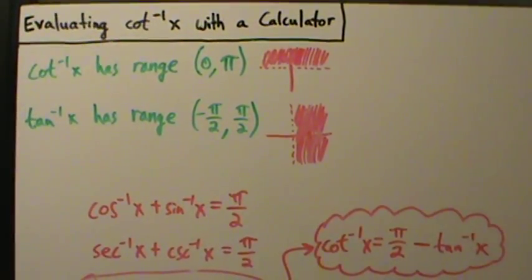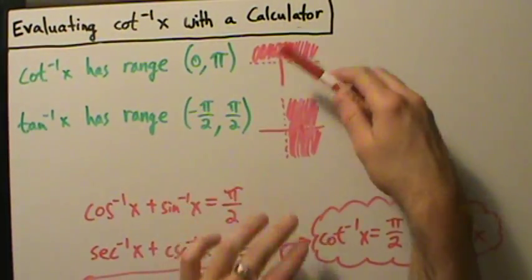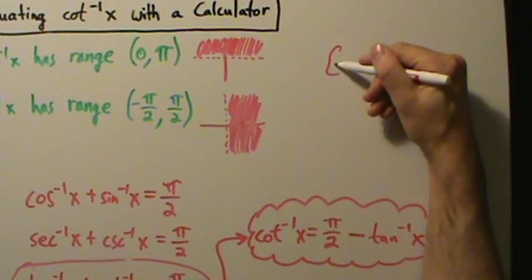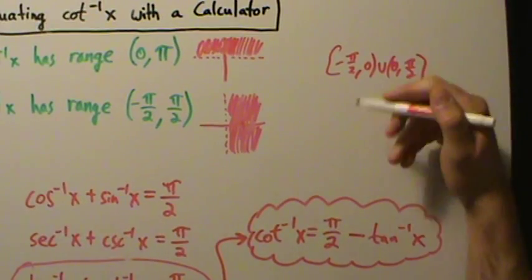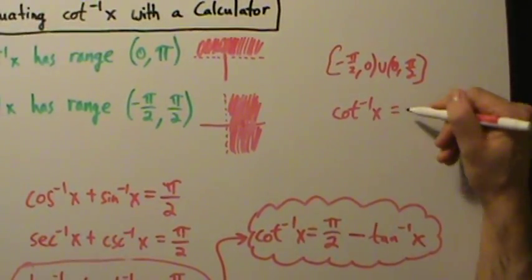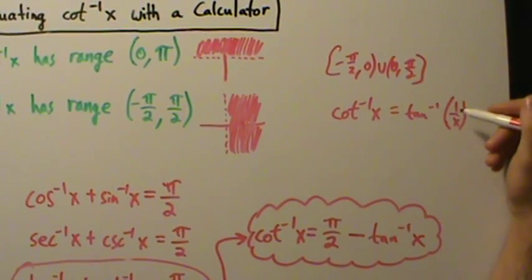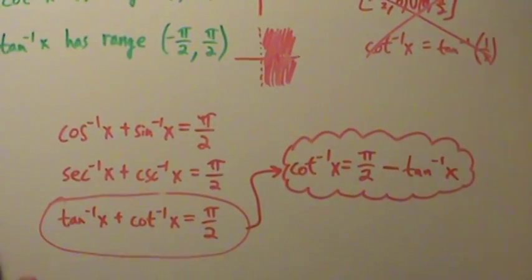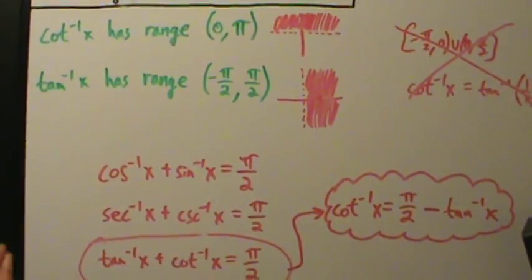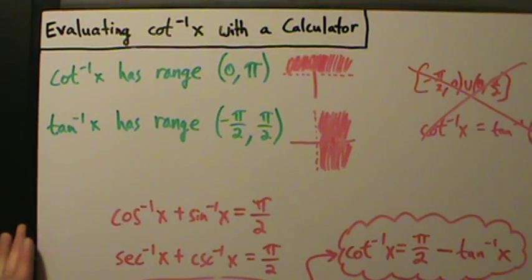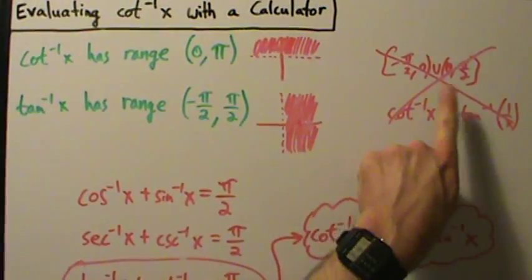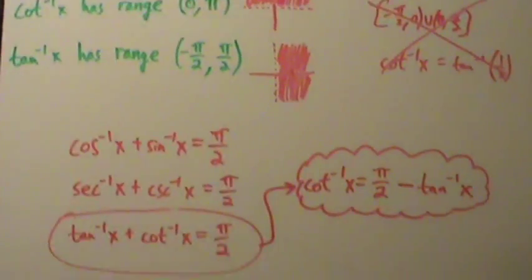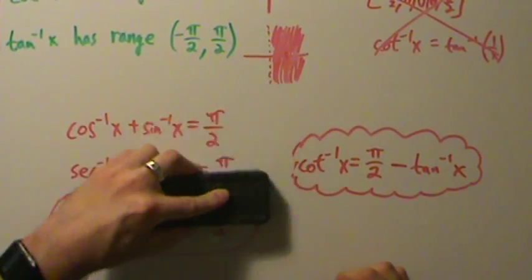We only have this identity being true because of how we defined the inverse cotangent function in an earlier video. If we had used the other range — negative π/2 to 0 union 0 to π/2 — this identity would not be true, but the quadrant approach would have worked out the same as in the previous two videos. So be very careful about how inverse cotangent is being defined, since it affects which formula you can use. Since we went with range 0 to π, we use arccot(x) = π/2 − arctan(x). Let's erase and do some examples.